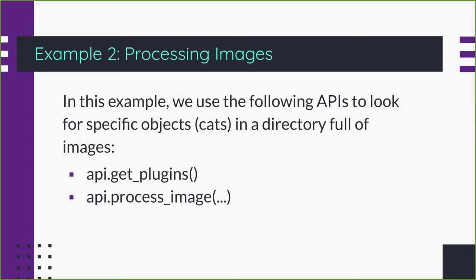Now I'm going to do a second example. I'm going to show you how to actually run inference with BrainFrame. In this case we're going to run inference on single images. I'm going to load images from my file system and process them, looking for cats inside of those images.